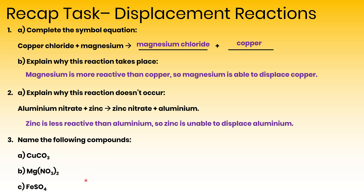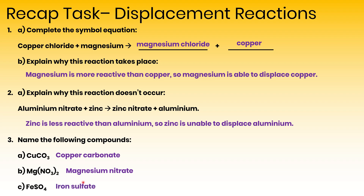Finally, we've got to name these compounds. Cu stands for copper and whenever you see CO3 you should write the word carbonate, so here we have copper carbonate. Mg is magnesium and NO3 should be spotted as nitrate, so here we have magnesium nitrate. Finally, Fe is iron and whenever you see SO4 you should say sulfate, so here we have iron sulfate.